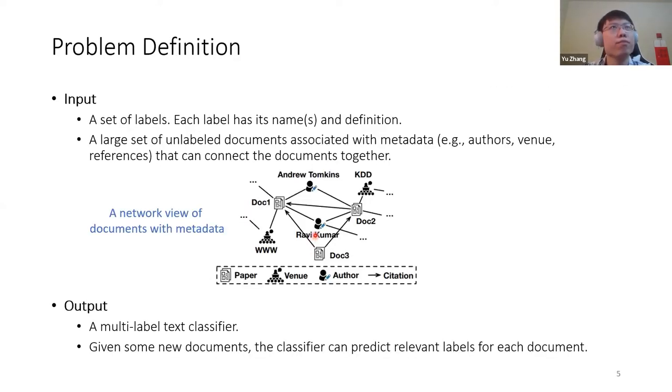So based on these two challenges, we formally define our problem as follows. We have a set of labels. Each label has its name and definition. We have a large set of unlabeled documents associated with metadata that can connect the documents together. I provide a network of papers with metadata here. You can see that maybe documents connected with each other, they share quite similar labels. Actually, this inspires our framework design, which I will talk about later. We don't have any training data again. So the desired output is a multi-label text classifier. We would like the classifier to be inductive. So given some new documents, the classifier need to predict relevant labels for each document.